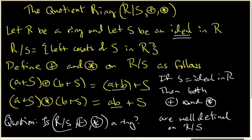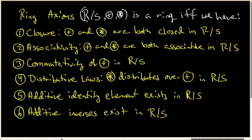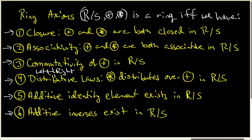We know how to investigate that. R mod S will be a ring if and only if all of the ring axioms are satisfied. In particular, we have to have closure, associativity, commutativity of addition, and distributive laws — one for the left and one for the right, because we do not know whether the ring R is commutative. We also have to have an additive identity element and additive inverses for everybody inside the ring. To verify that our quotient structure is a ring, we simply verify each and every one of these properties.